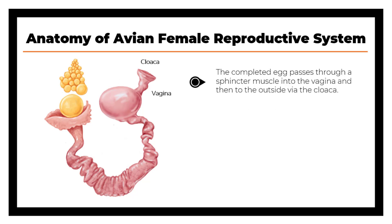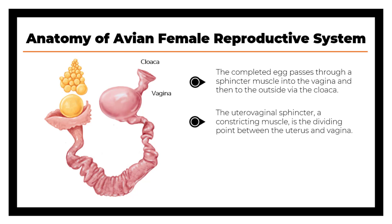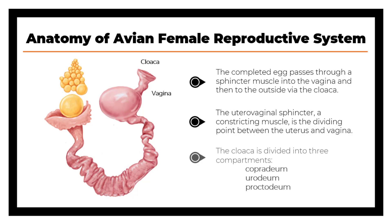The completed egg passes through the sphincter muscle into the vagina and then to the outside via the cloaca. The uterovaginal sphincter, a constricting muscle, is the dividing point between the uterus and vagina. The vagina has no role in formation of the egg, but in coordination with the shell gland participates in the expulsion of the egg. The cloaca is divided into three compartments: the coprodeum, urodeum, and proctodeum.